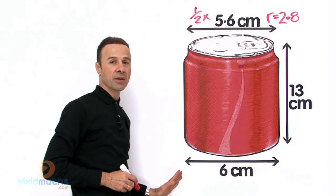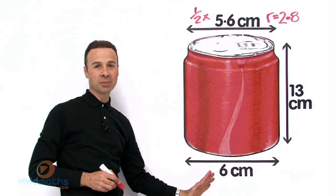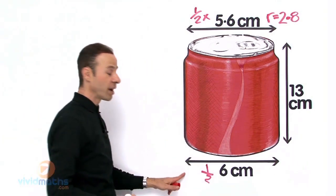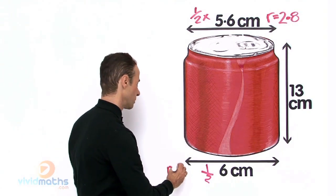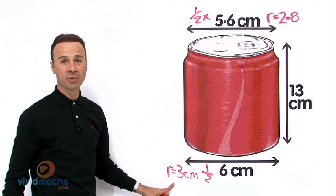Now let us work out the bottom here. That is a much bigger diameter, so that is 6cm. We are going to halve that, so our radius for the bottom will be 3cm at the bottom.